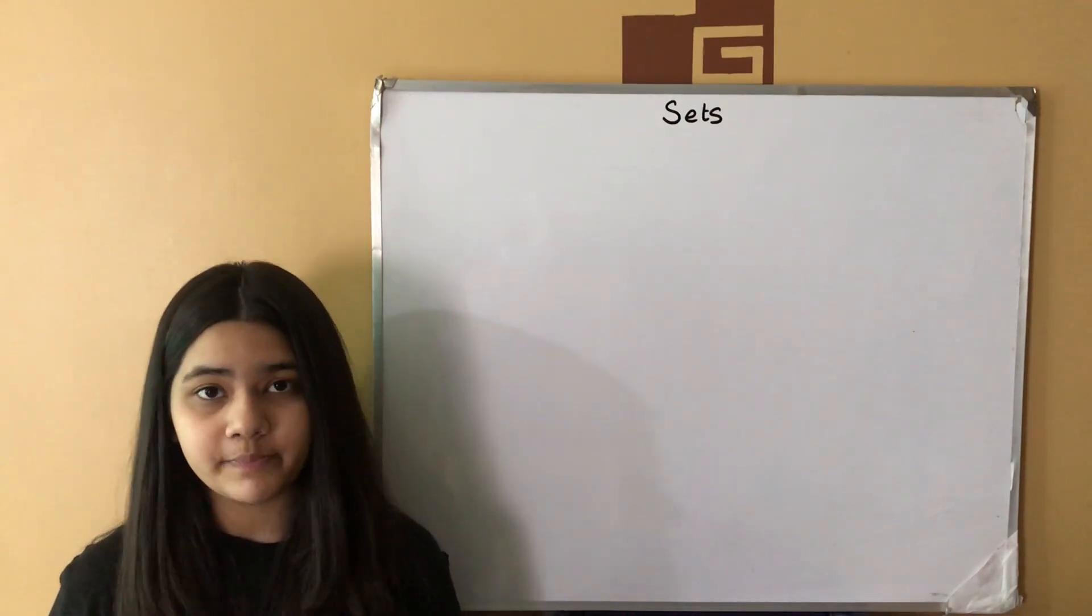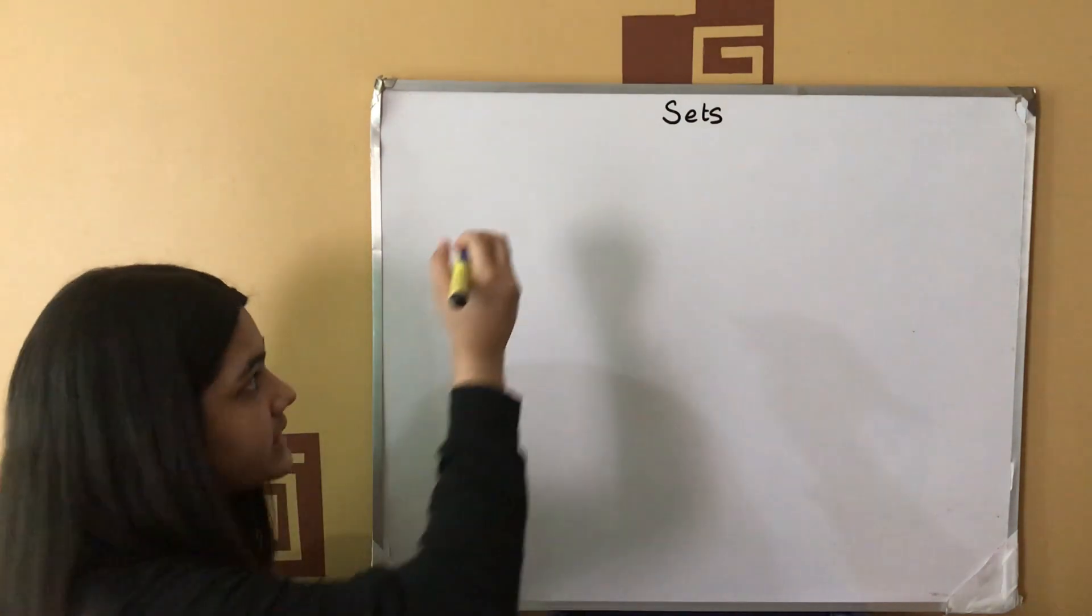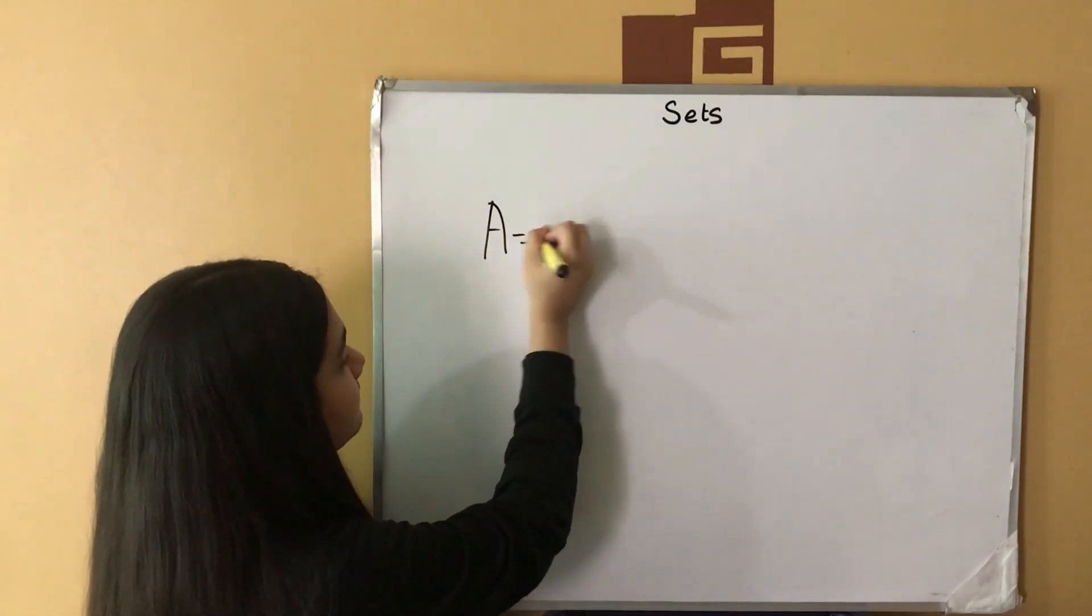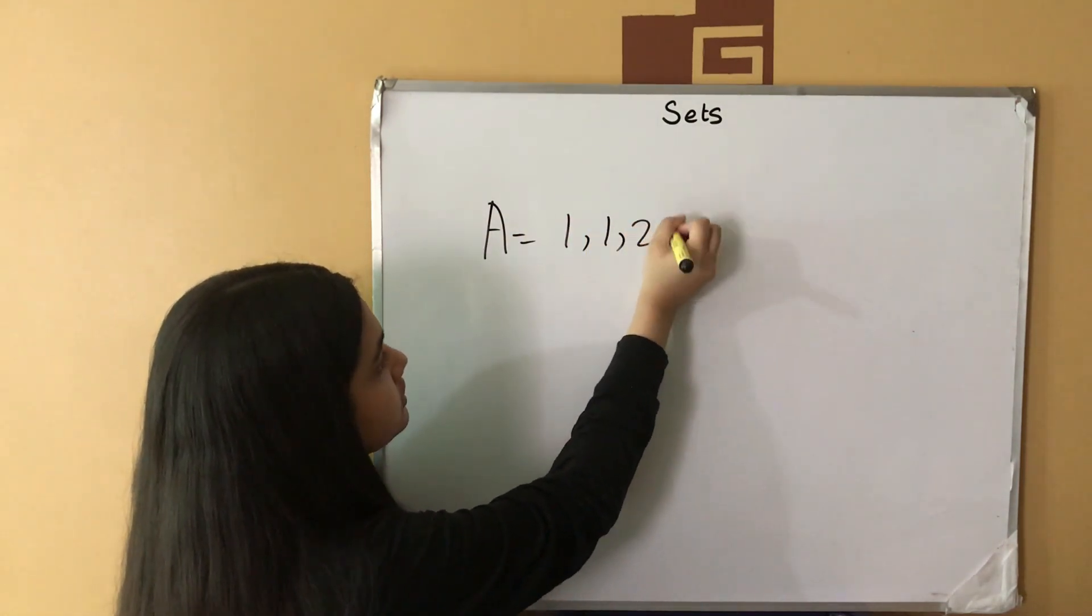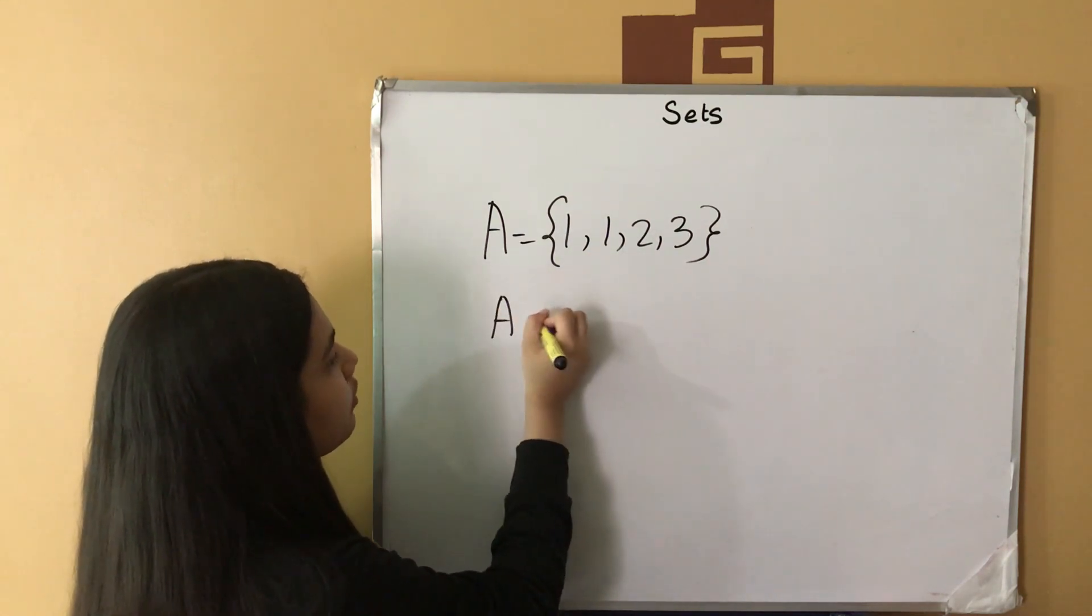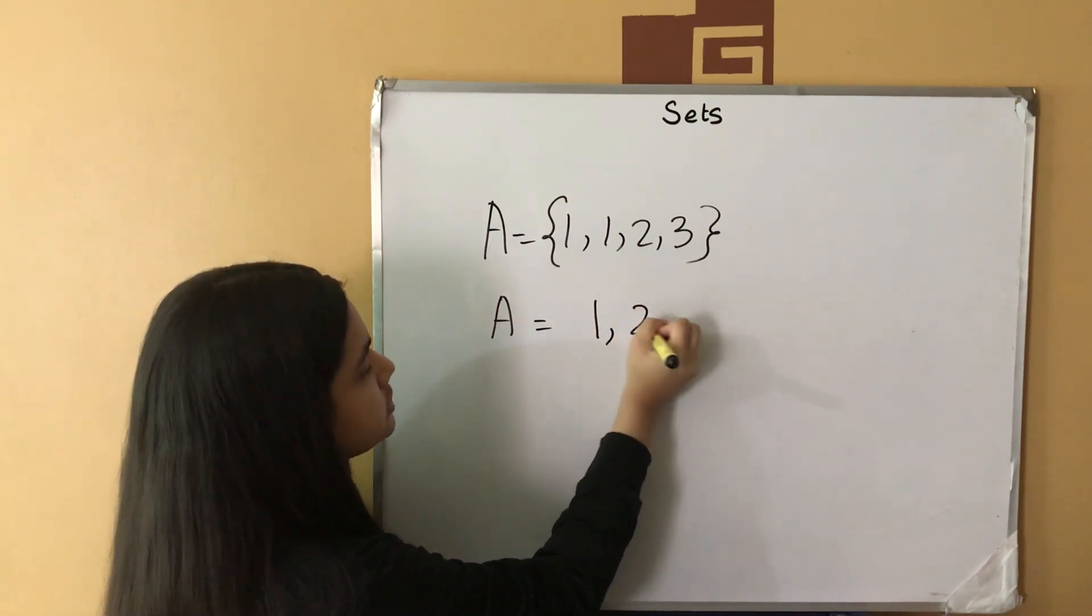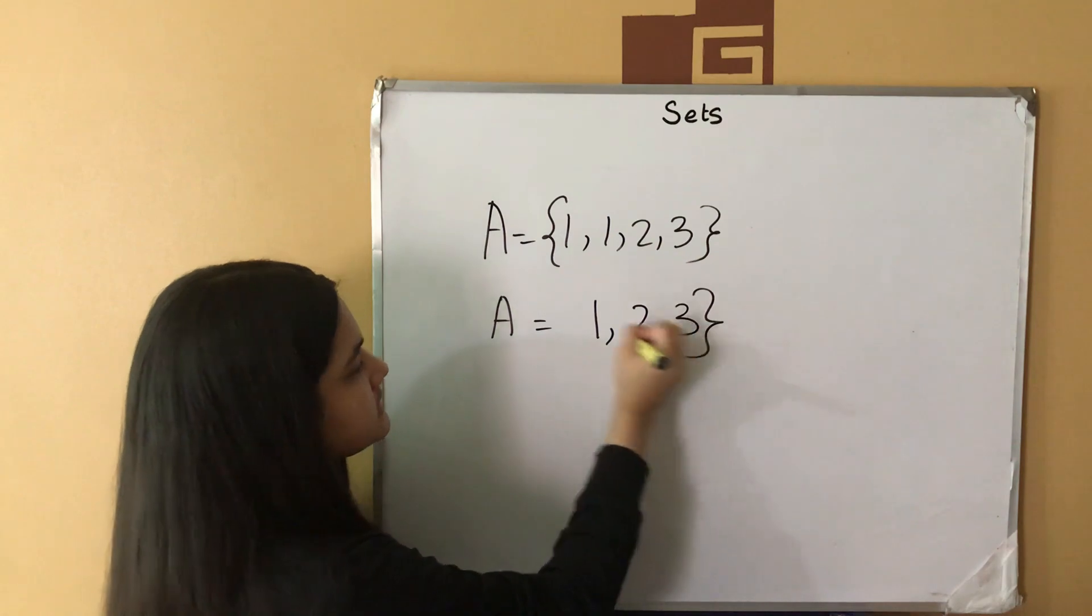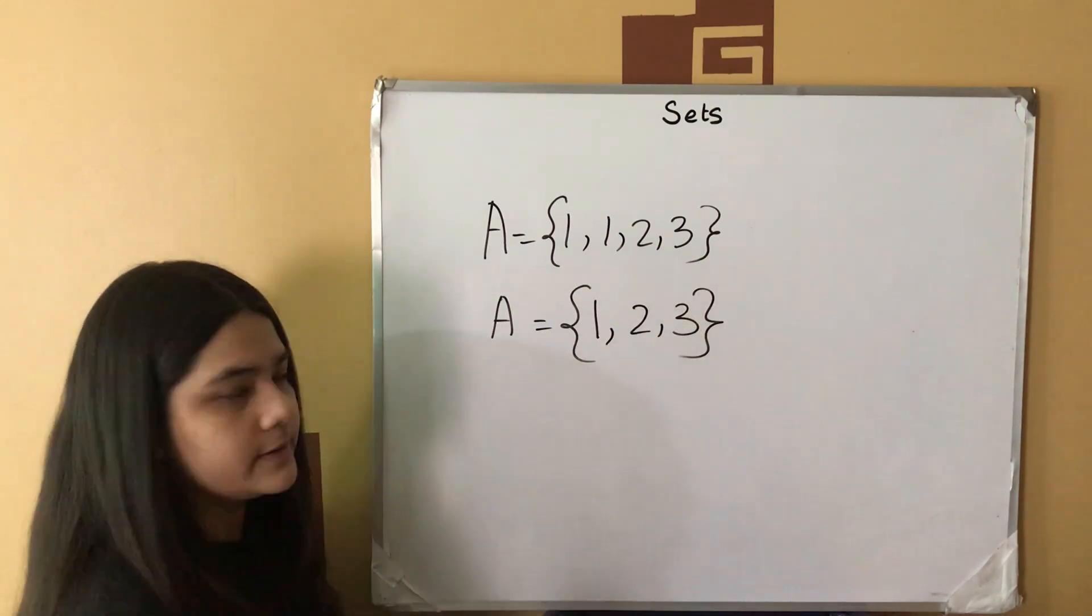When we write sets, we don't repeat the elements. Instead of writing set A contains the elements 1, 1, 2, 3, set A contains the elements 1, 2 and 3.